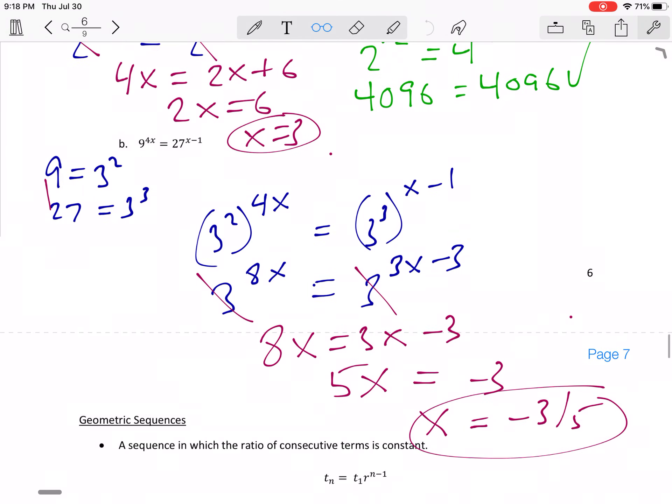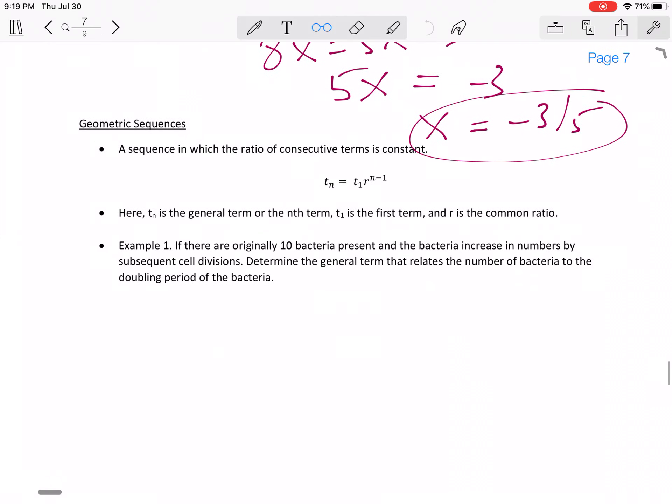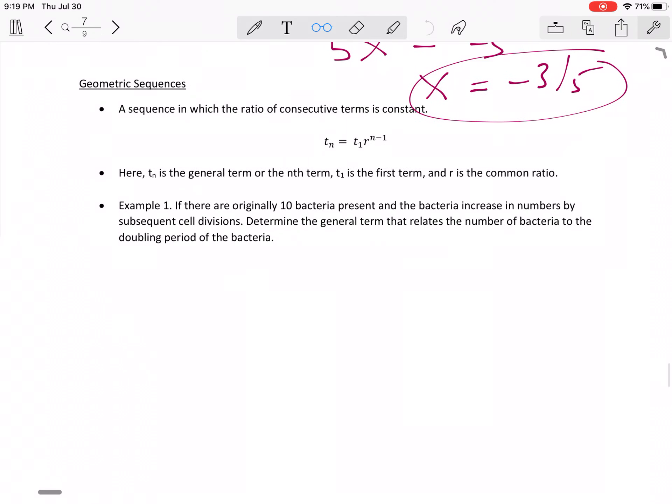Hi class, so we'll continue with the unit and now we'll look at geometric sequences. So the first thing we'll talk about is where you have a sequence given by this equation. So I just want to go through all the terms here. So here TN is the general term or the nth term, T1 is the first term, and R is the common ratio.